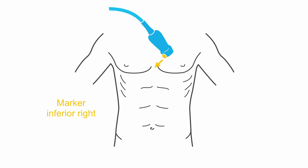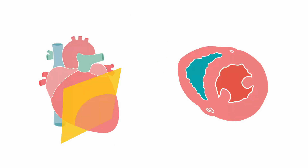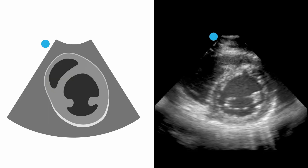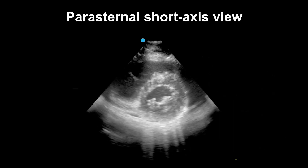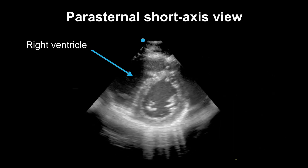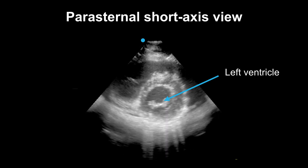Once you obtain your parasternal long axis view, it's very easy to obtain your parasternal short axis view. All you have to do is rotate your probe 90 degrees clockwise to now have your indicator towards your patient's right hip. You should have your right ventricle on the top of your screen and the left ventricle just adjacent to it — you will only see the two ventricles on this view. Notice your bright white septum in between the two ventricles.